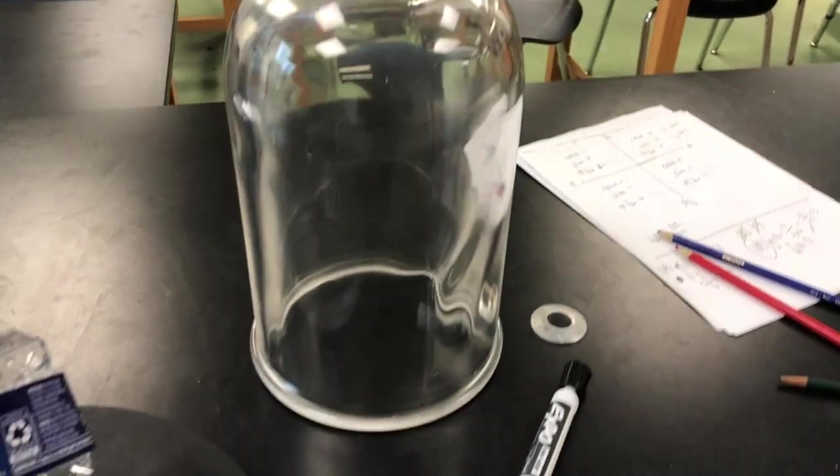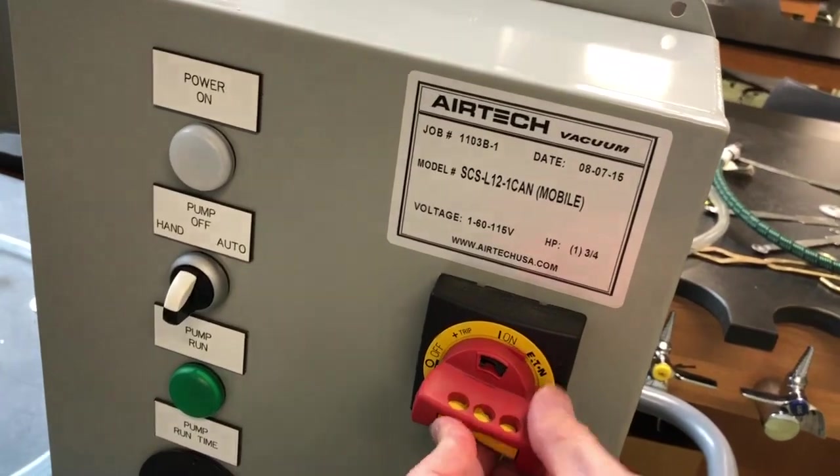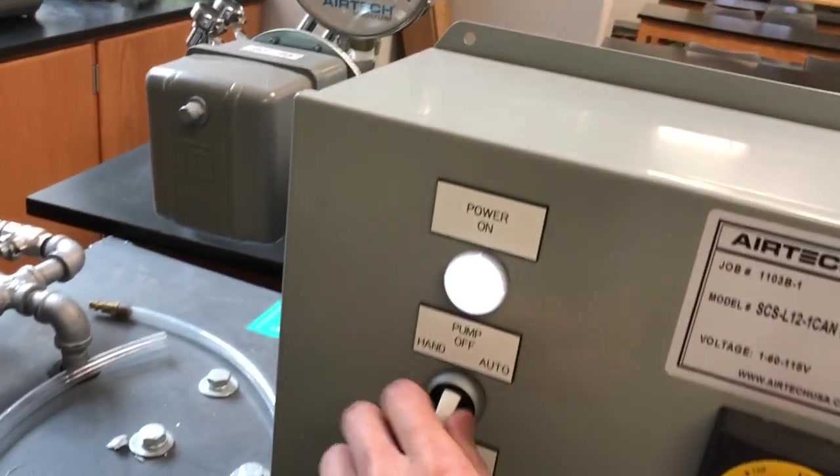All right, so here's the bell jar, it's the bell jar pad, crushed water bottle sealed, a little bit of water at the bottom. Let's get the vacuum pump going, turn it on, charge it up.